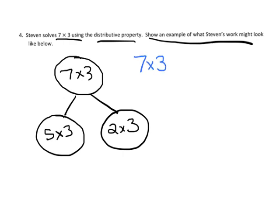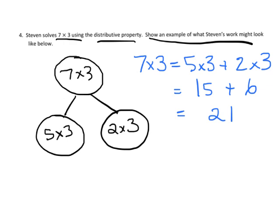If I wanted to do it in the more official distributive property method it would look like seven times three equals five times three plus two times three. Then solving it, this is fifteen plus six and this is twenty one. There's our answer. Over here in our number bond we could have done this times equals fifteen and equals six and put them together to equal twenty one.